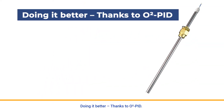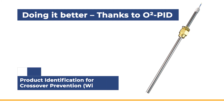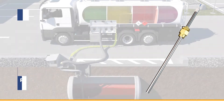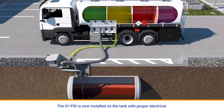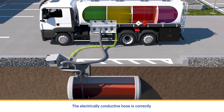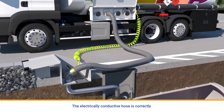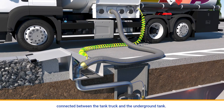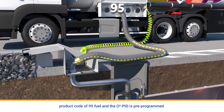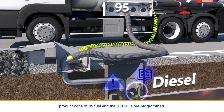Doing it better — thanks to O2PID. Scenario 2: Product identification for crossover prevention with O2PID. The O2PID is now installed on the tank with proper electrical connections to the delivery inlet of the underground tank filled with diesel. The electrically conductive hose is correctly connected between the tank truck and the underground tank. The truck amplifier is pre-programmed with the electrical product code of 95 fuel, and the O2PID is pre-programmed with the electrical product code of diesel.